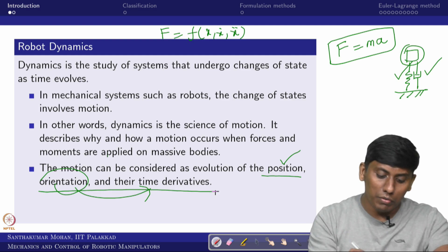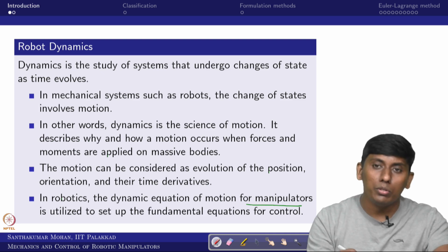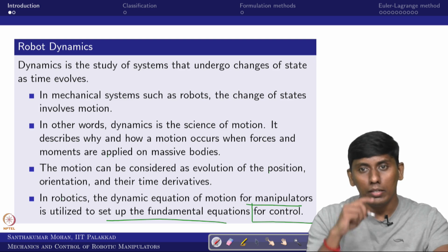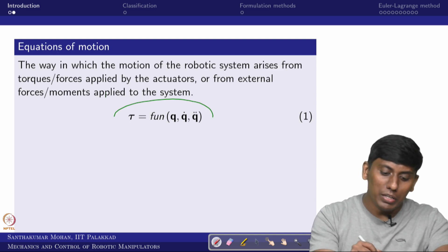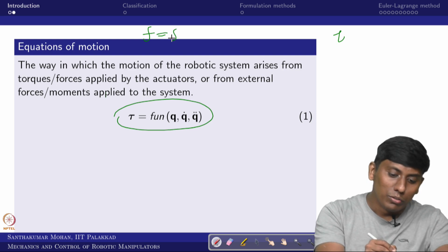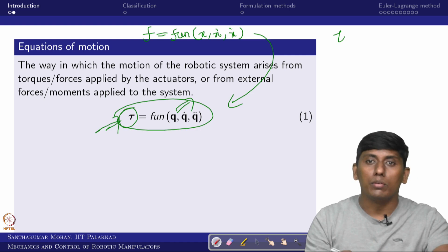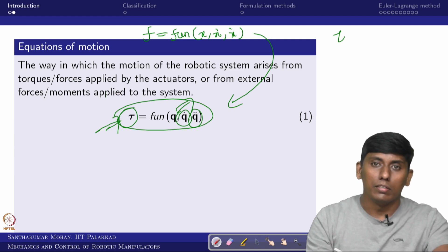This equation is mainly used for two things: it gives a fundamental equation for control, and it can be used for designing the overall system. We are writing a generalized equation where tau is the input vector and q is the joint variable vector, with velocity and acceleration terms. This is the generalized form, and it is important because the system is non-linear.